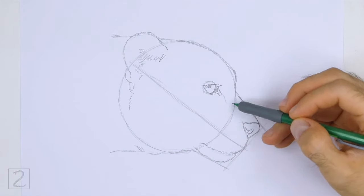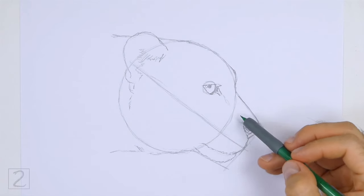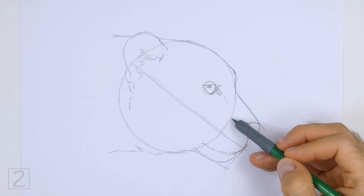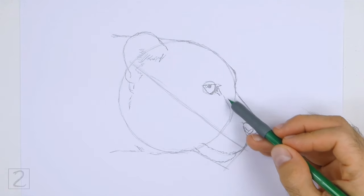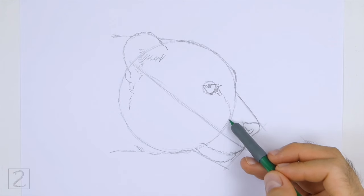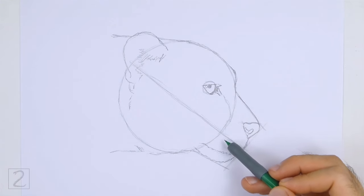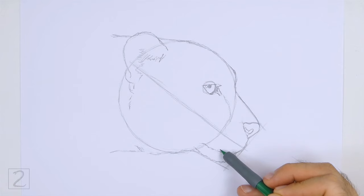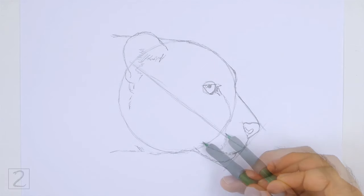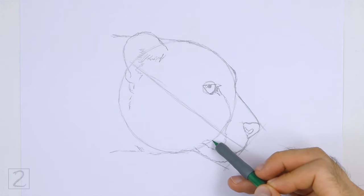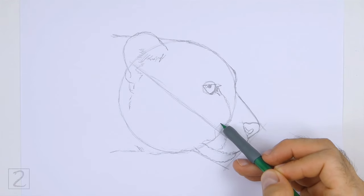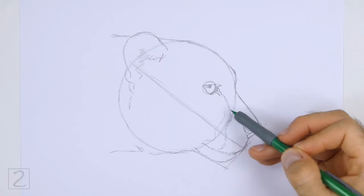Inside the head, draw two long wavy lines for the distinctive cheetah marking. Sketch lightly at first and when you get the shape right, darken the lines. Extend these lines from the eye to the mouth. The bottom of this shape should be wider than the top.